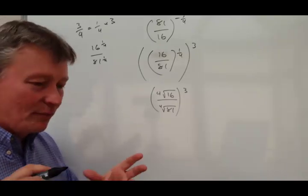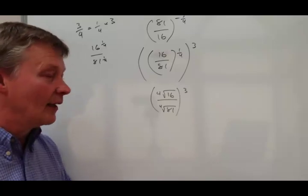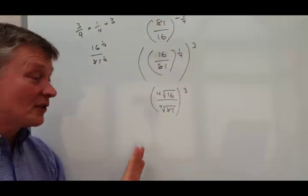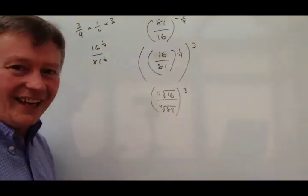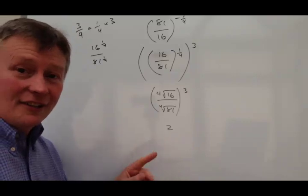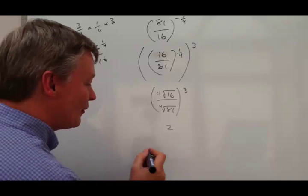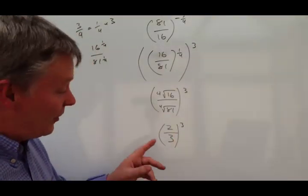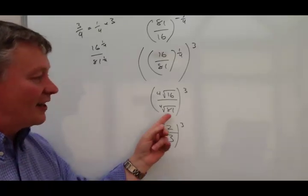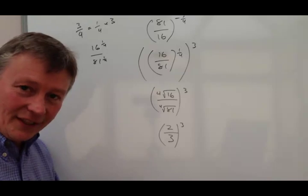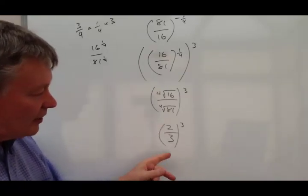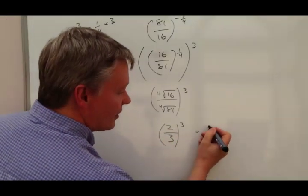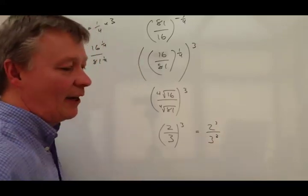It looks a little bit complex at the moment, but they generally do tend to pick these numbers so they work out fairly well arithmetically, because they're not testing your arithmetic skills — they're testing your ability to manipulate this to get to a solution. The fourth root of 16 is actually 2, because 2 times 2 times 2 times 2 is 16. And the fourth root of 81 is actually 3, because 3 times 3 times 3 times 3 is 81. Now you've got that fraction to the power of 3, which is the same as 2 to the power of 3 divided by 3 to the power of 3.